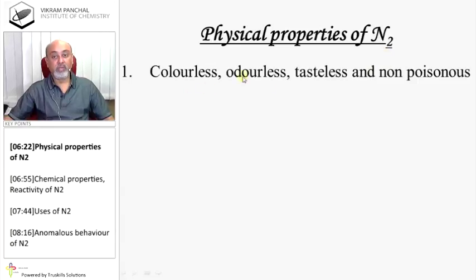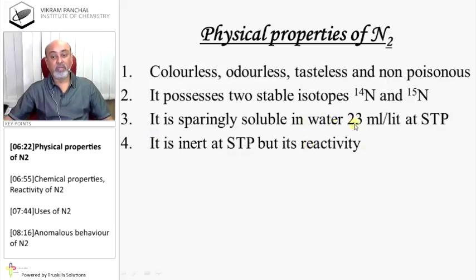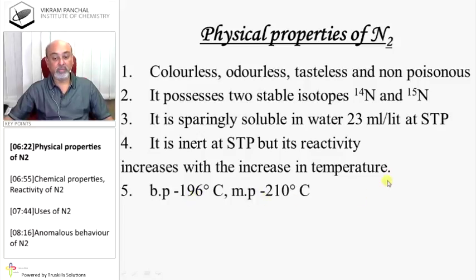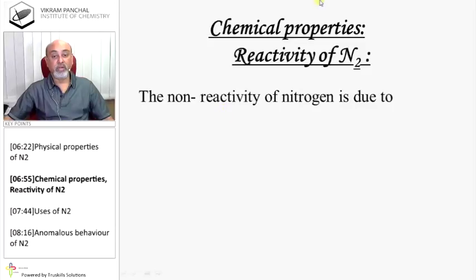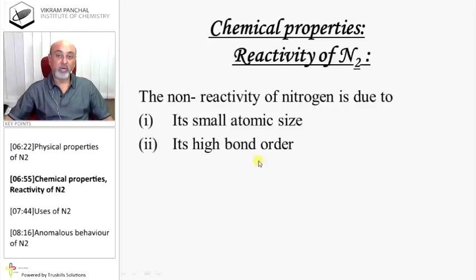Physical properties of nitrogen: Colorless, odorless, tasteless, and non-poisonous. It possesses two stable isotopes, nitrogen-14 and nitrogen-15. Sparingly soluble in water, 23 ml at STP. Inert at STP but reactivity increases with temperature. Boiling point minus 196 degrees Celsius, melting point minus 210 degrees Celsius. The non-reactivity of nitrogen is due to its small atomic size and high bond order.